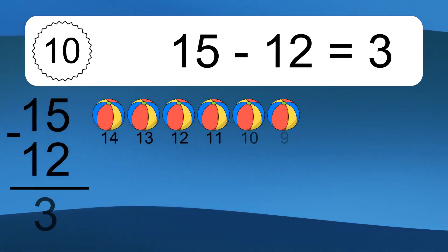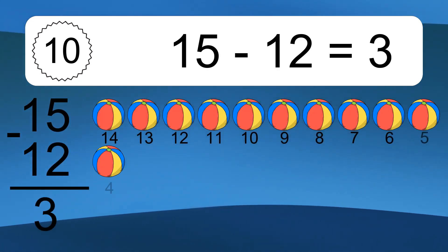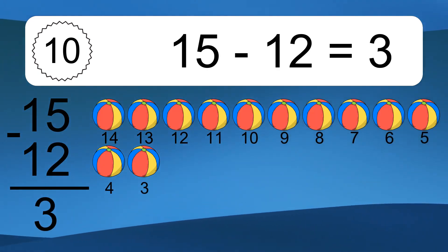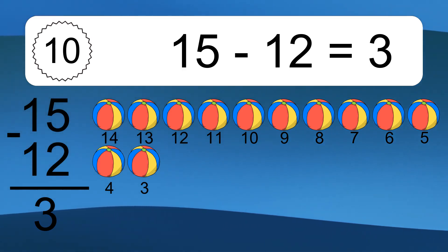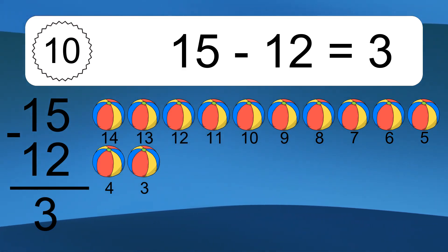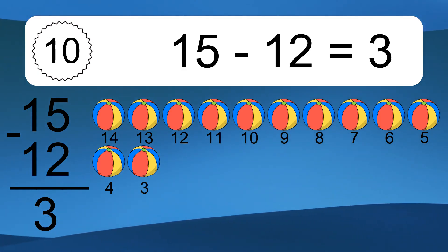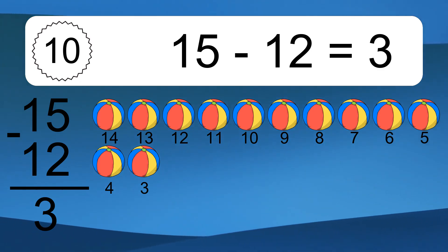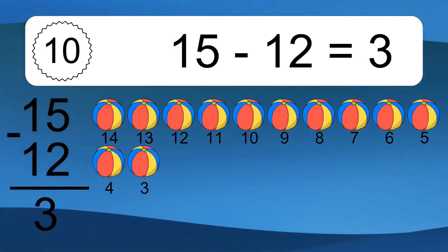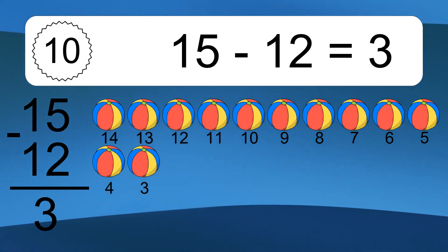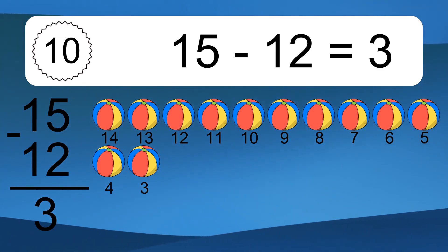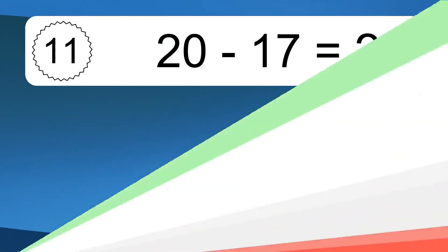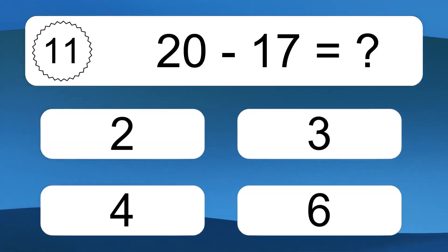15 minus 12 equals what? 15 minus 12 equals 3. Let's count it: 14, 13, 12, 11, 10, 9, 8, 7, 6, 5, 4, 3.